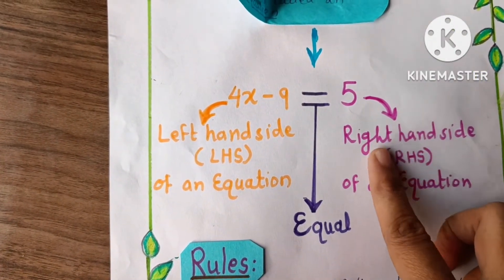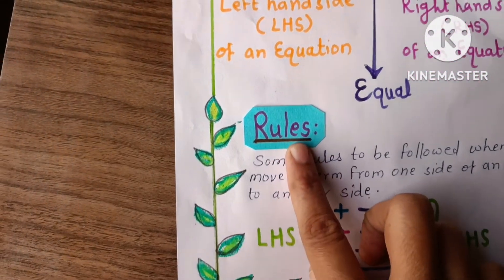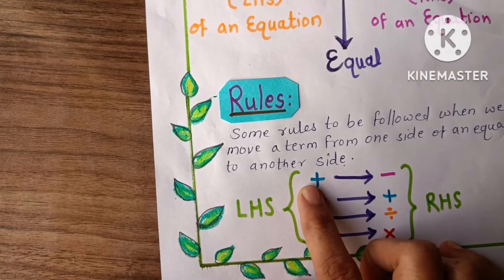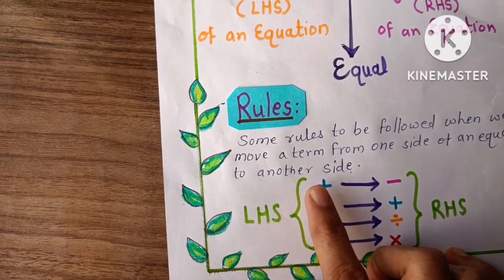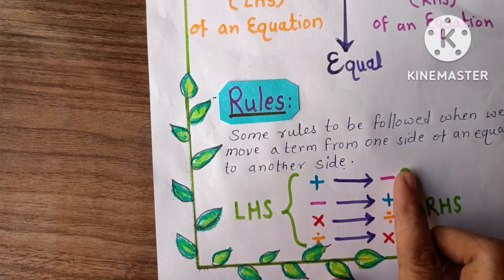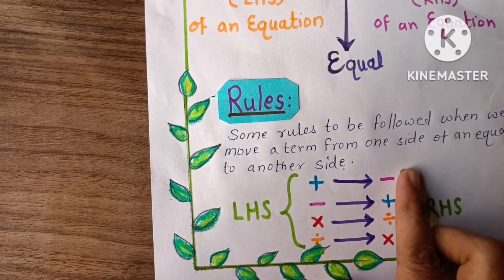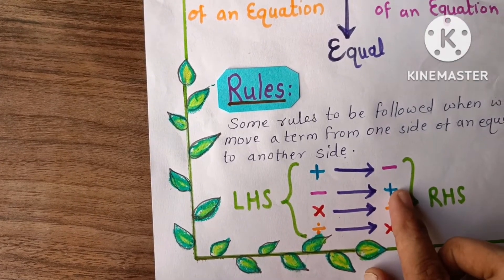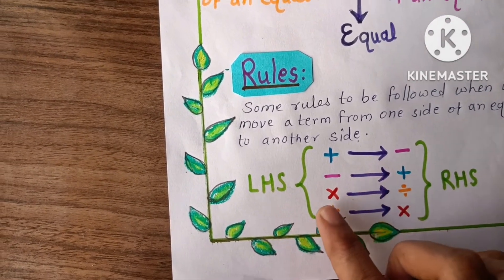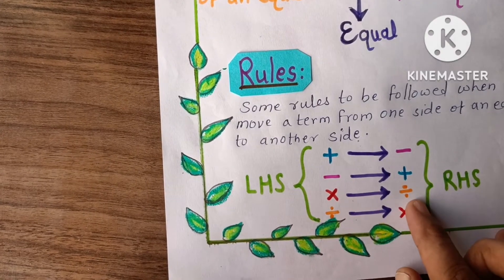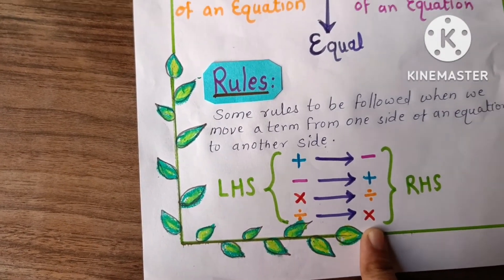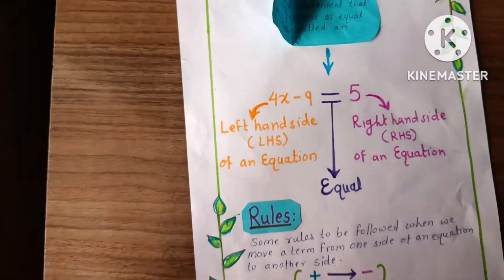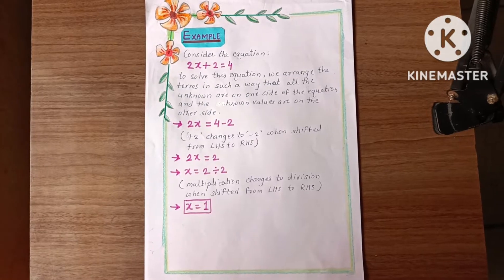Then rules — there are some rules in equations. If plus is on one side, when it moves to the opposite side it will convert into minus. Minus will convert into plus when it moves to the opposite side. Multiplication will convert into division, and division will convert into multiplication. So let's see the next page — the example of the equation.